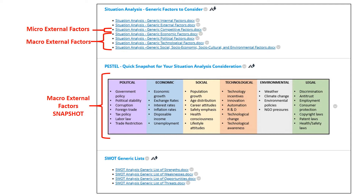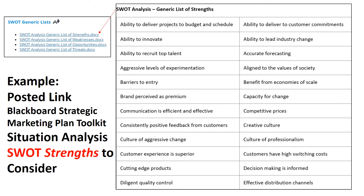A snapshot — that's the colored picture you see on the screen — of the macro external factors, or the PESTLE factors, is captured in Blackboard for immediate reference. The toolkit also has a generic list of strengths, weaknesses, opportunities, and threats that would be good to review as you work on the situation analysis part of the Strategic Marketing Plan.